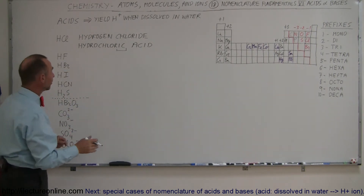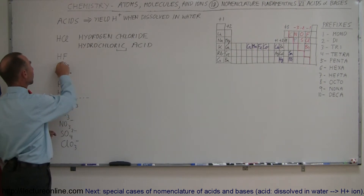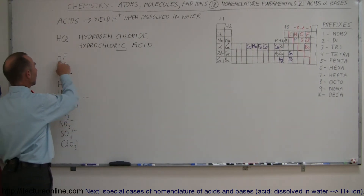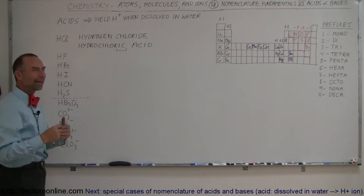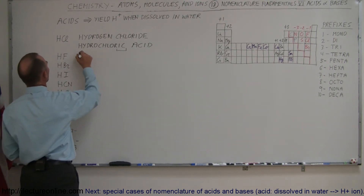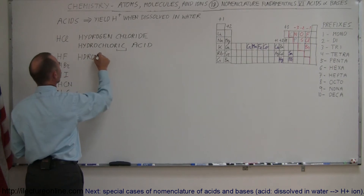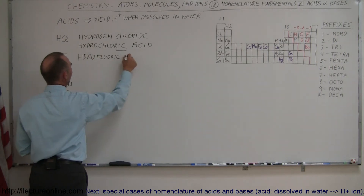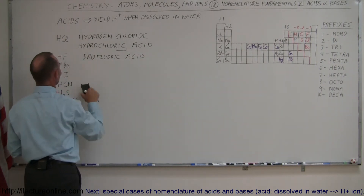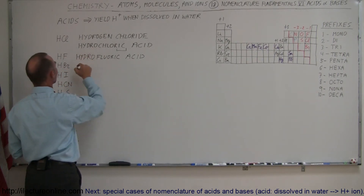Here we have hydrogen and fluorine, so normally we call that hydrogen fluoride. But since it is an acid — because when we place this in water the hydrogen and the fluorine will dissociate, and hydrogen will free-float in the water making it more acidic — we call it hydrofluoric acid.